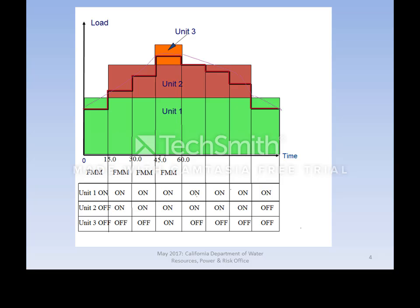To follow the increasing demand of the load profile, Unit 2 is started in the second 15-minute interval. Unit 2 ramps up to reach its capacity by the beginning of the fourth 15-minute interval and remains at full production during the fifth interval. During the fourth 15-minute interval, the production of Units 1 and 2 is insufficient to satisfy demand, so Unit 3 must produce at a fraction of its capacity. Starting in the fifth interval, demand decreases, so Unit 3 is shut down and Unit 2 is ramped down during the sixth interval and shut down during the seventh.